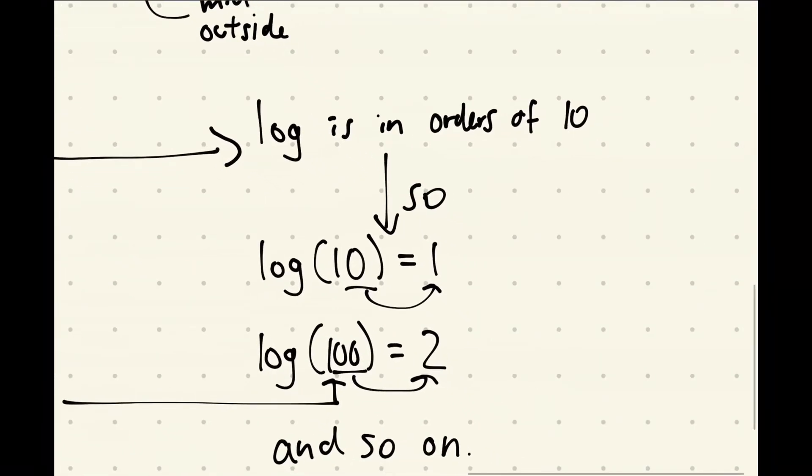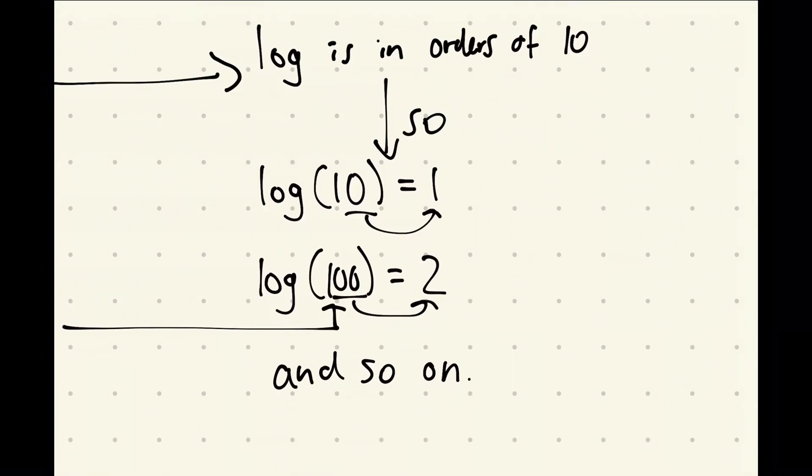Now, if we're just looking at log, log is calculated in orders of 10. So what that means is log of 10 equals 1, log of 100 equals 2. And think about it in this way, where log is counting the number of zeros after a 1.